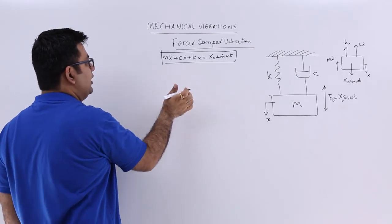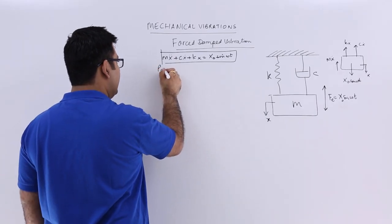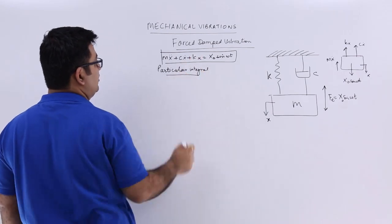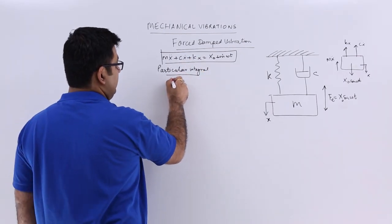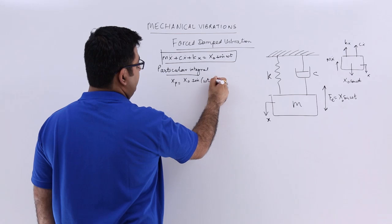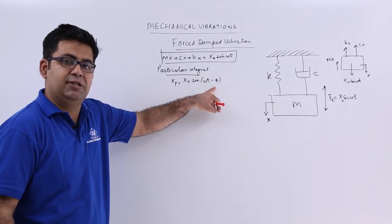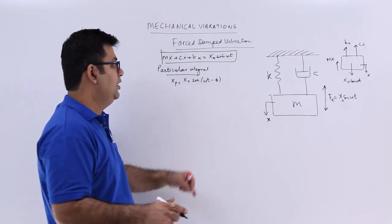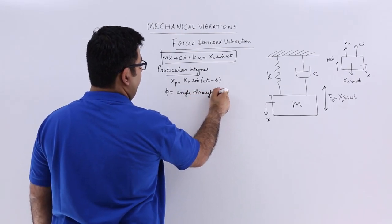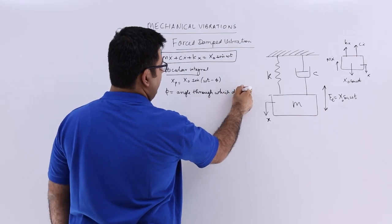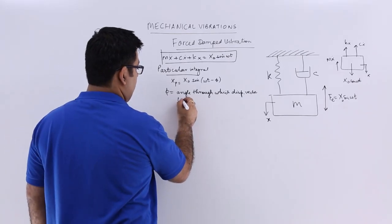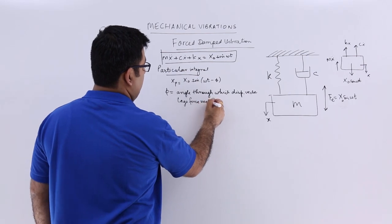The solution of such a differential equation — specifically the particular integral — is given as xp, and this is given as x0 * sin(vt - phi). Now phi is the phase difference between the displacement and the force vector. So phi is the angle through which the displacement vector lags the force vector.